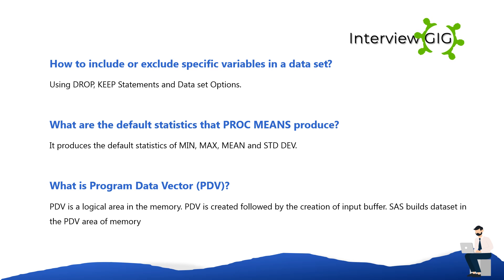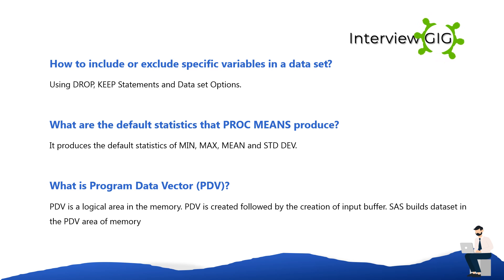What are the default statistics that PROC MEANS produces? It produces the default statistics of MIN, MAX, MEAN, and STD DEV. What is program data vector (PDV)? PDV is a logical area in the memory. PDV is created followed by the creation of input buffer.